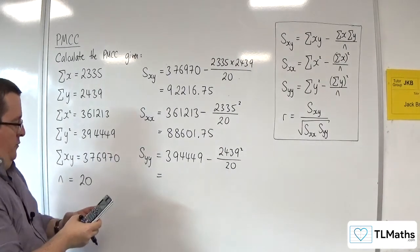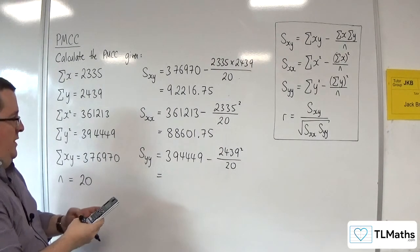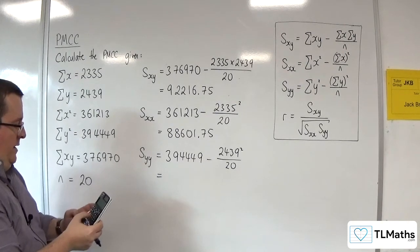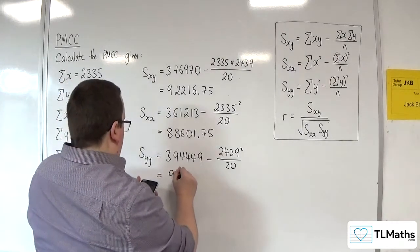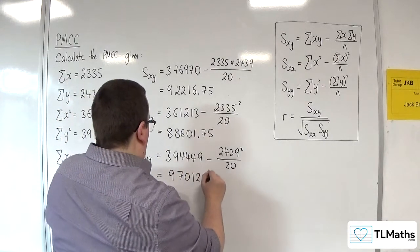So 394449 take away 2439 squared over 20. So, 97012.95.